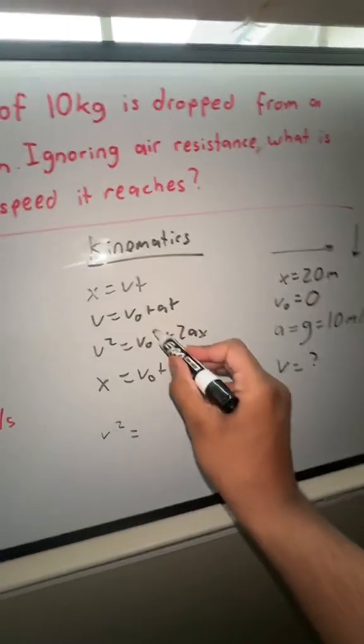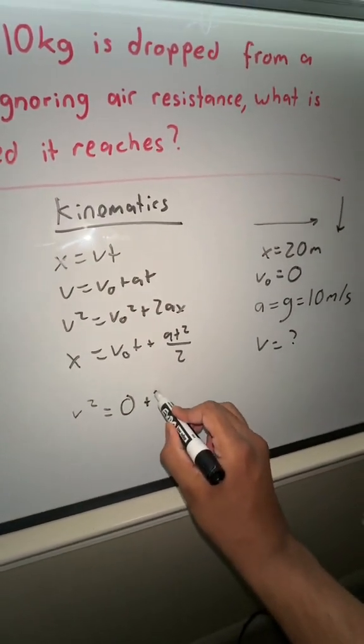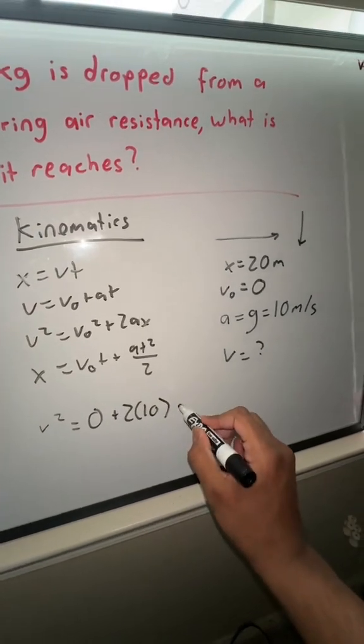We can start with v² equals—this is going to be zero squared, which is zero, plus 2 times 10 (which is a) times x, which is 20.